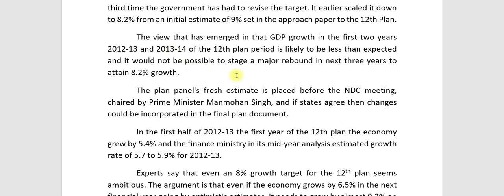Of the 12th plan period, growth in early years was likely to be less than expected, and it would not be possible to stage a major rebound in the next three years to attain 8.2 percent growth. The plan panel's fresh estimate was placed before the NDC meeting chaired by Prime Minister Manmohan Singh.